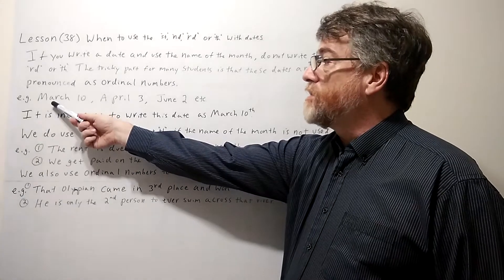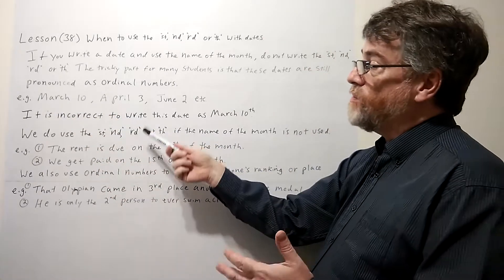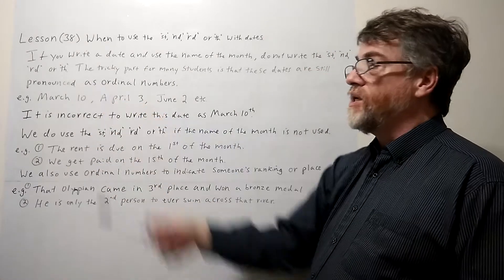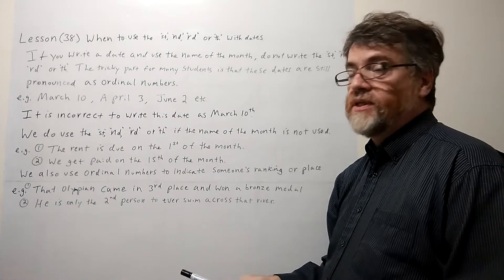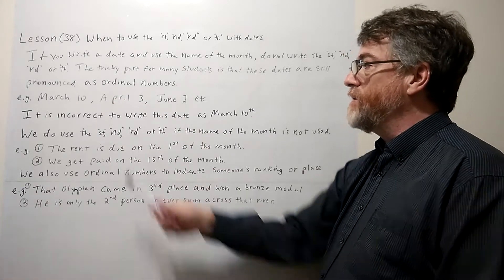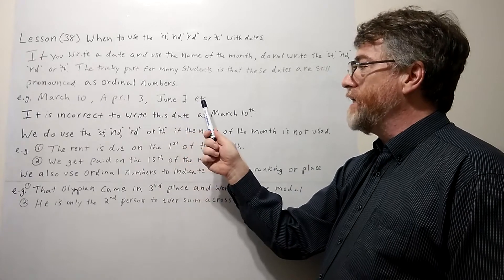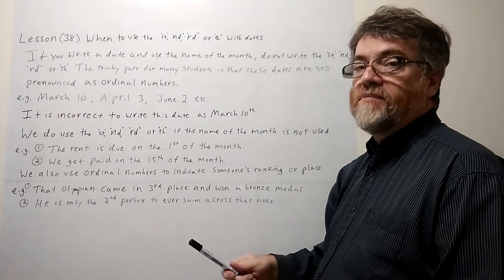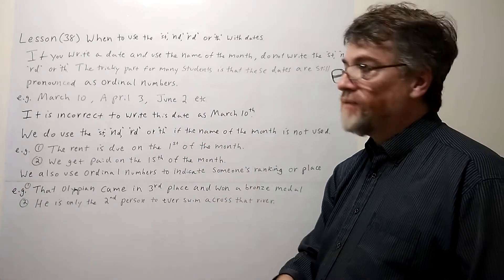Let's look at the example here. This is pronounced March 10th. You notice that we do not write the TH here. You still have to pronounce it as 10th. March 10th, April 3rd, June 2nd, etc. Yes, it is not March 10. It is March 10th.